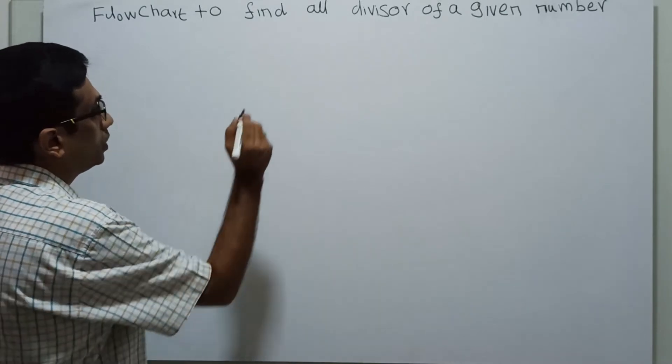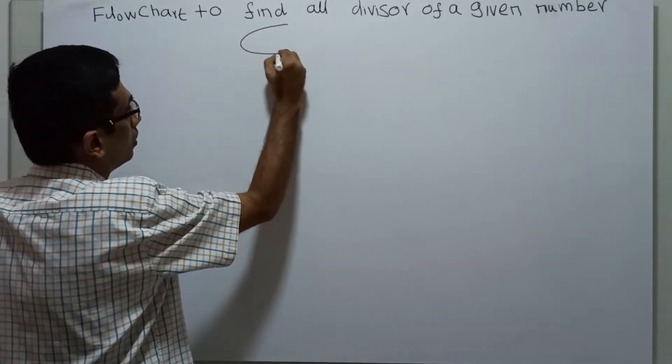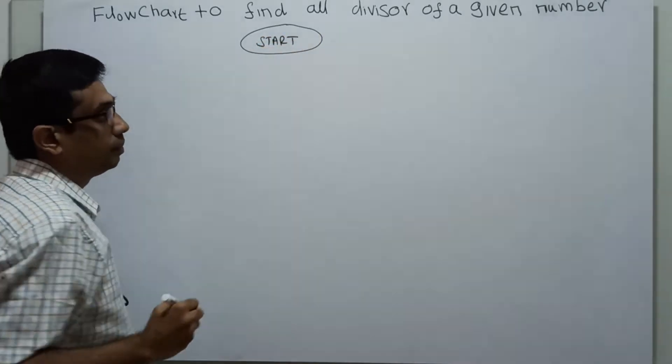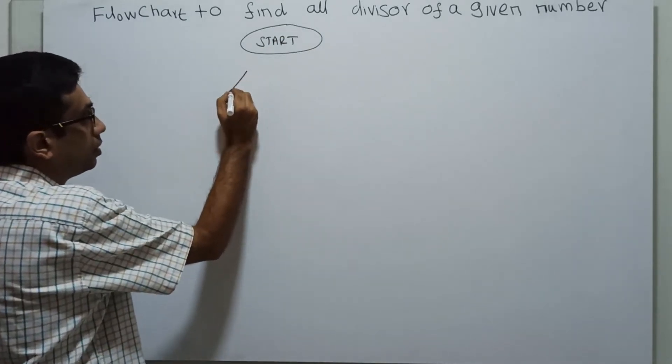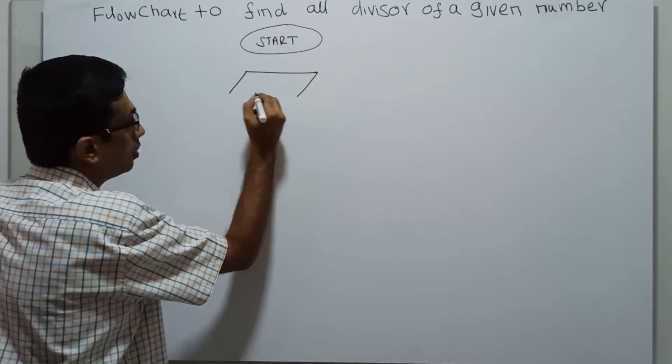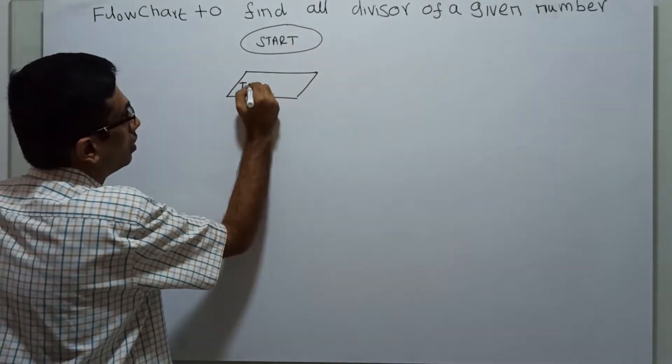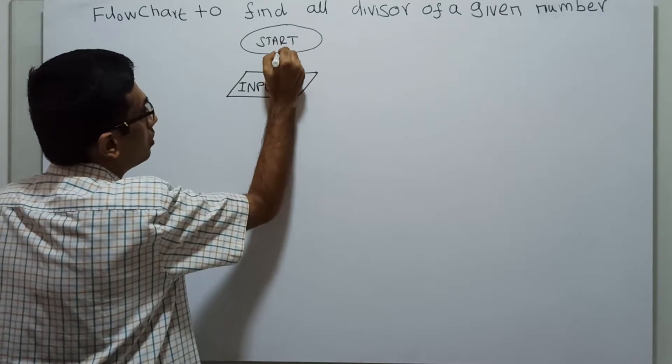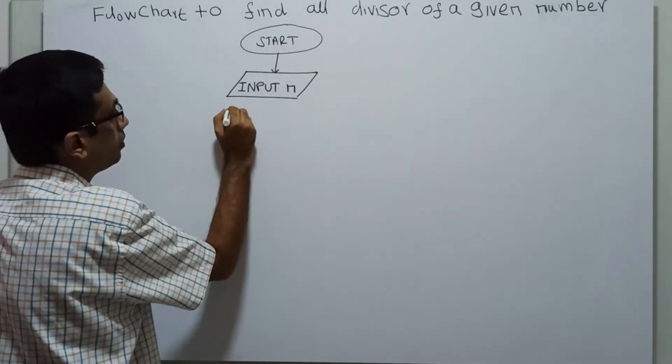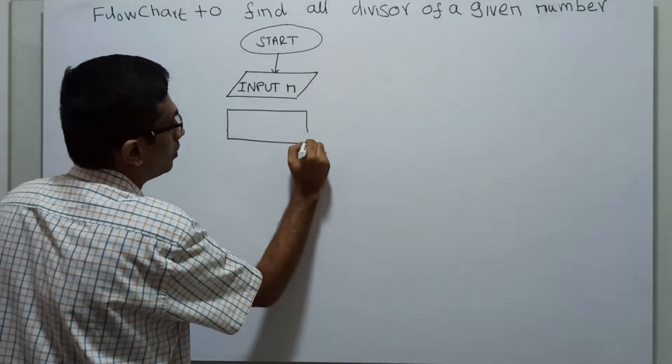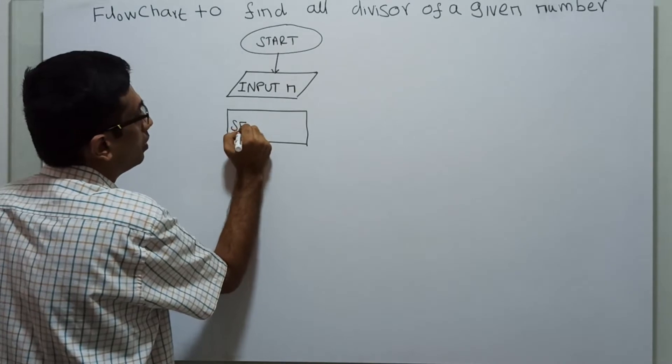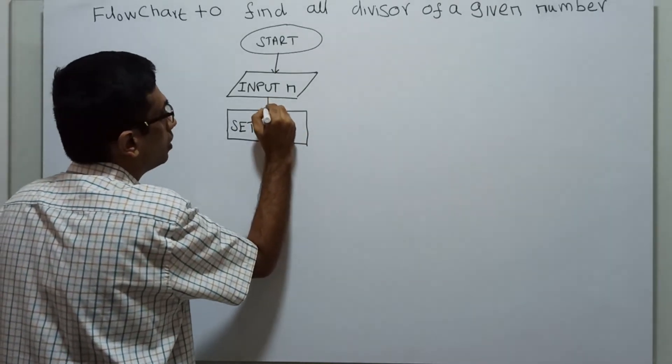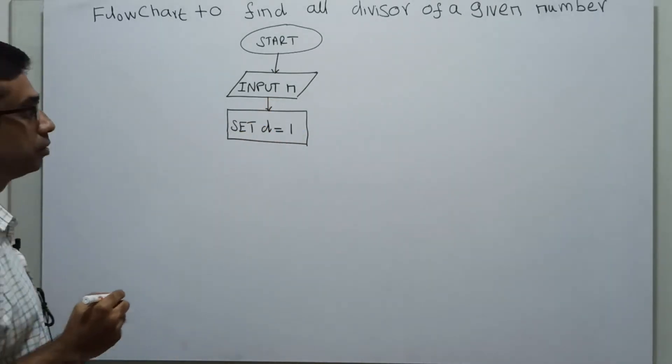So directly go to the flowchart. So logical start. After that, input the number N. Next, I am setting the value of the variable d equal to 1. Set d equal to 1.